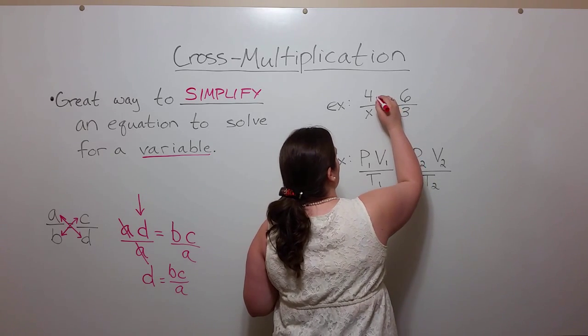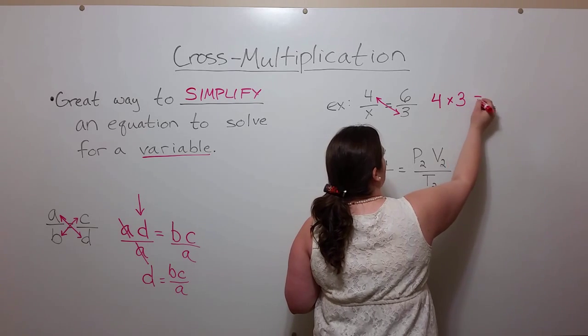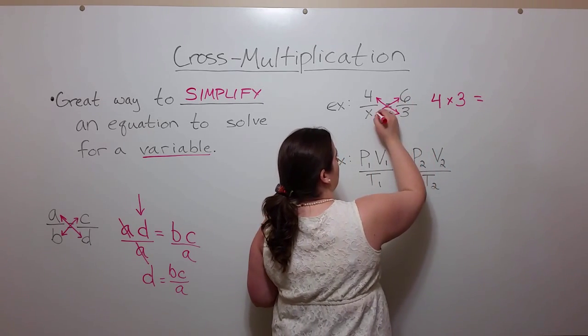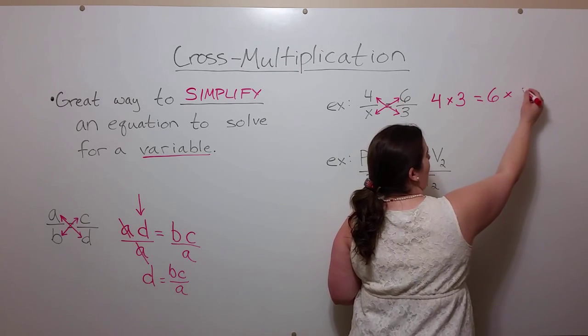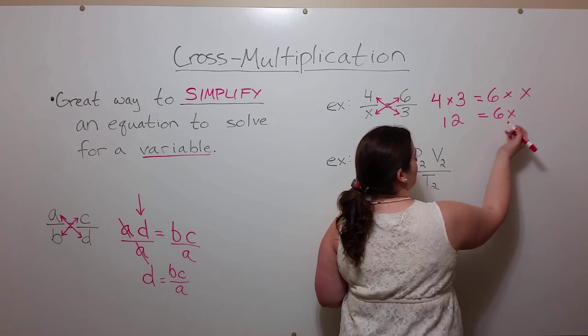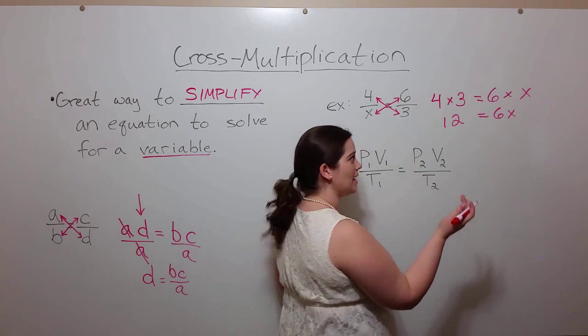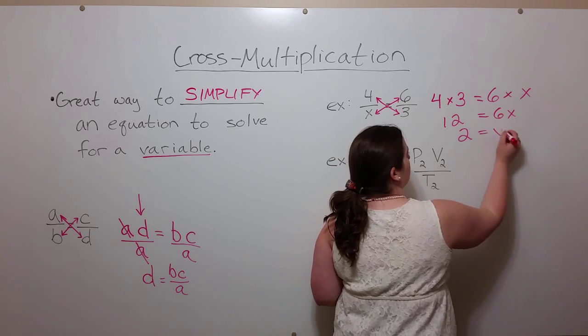This will tell you that 4 times 3 equals 6 times X. This means 12 equals 6X. Divide both sides by 6 and you get that X equals 2.